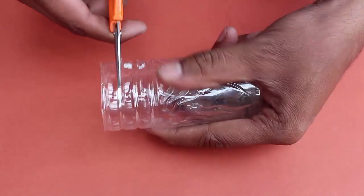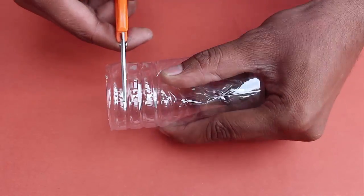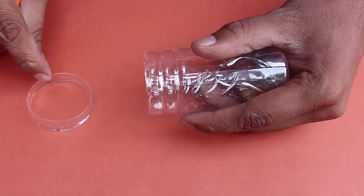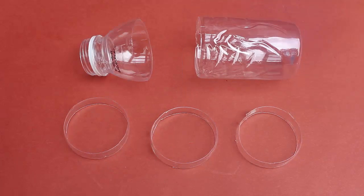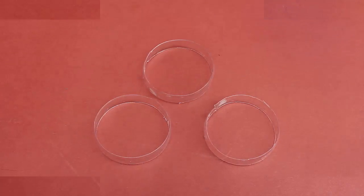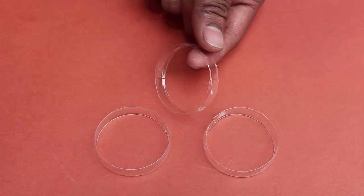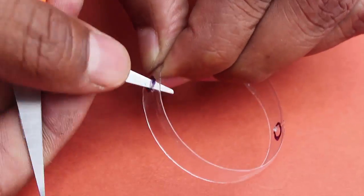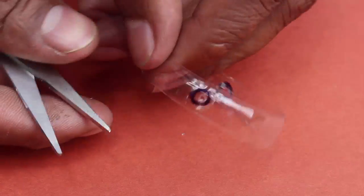Once you have two or three plastic hoops like this, then make two diametrically opposite points on the rings. With the help of the scissors point, make small holes. Both these holes will be diametrically opposite.